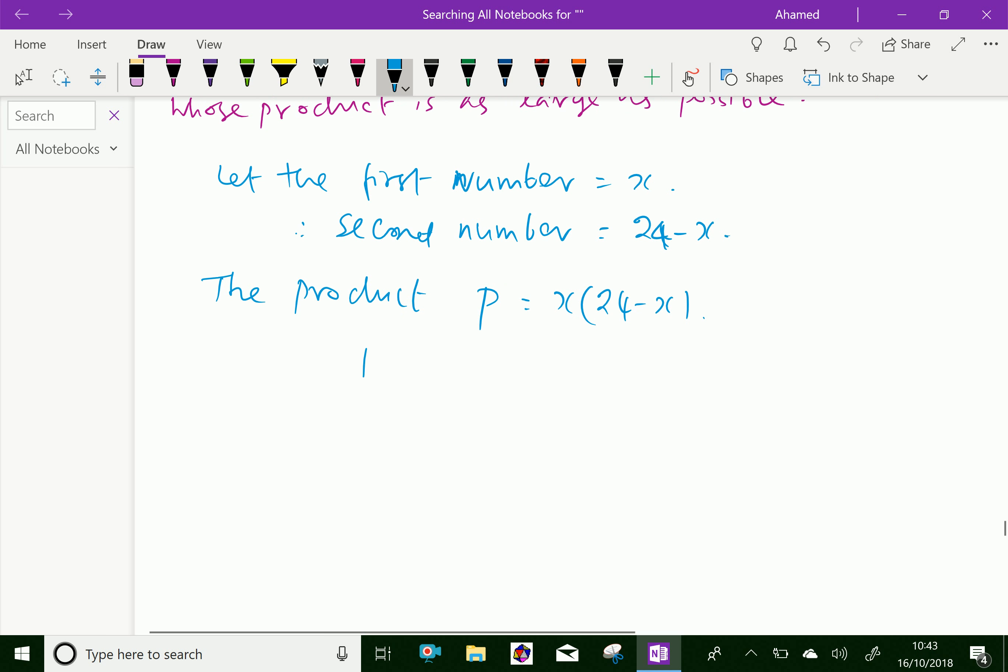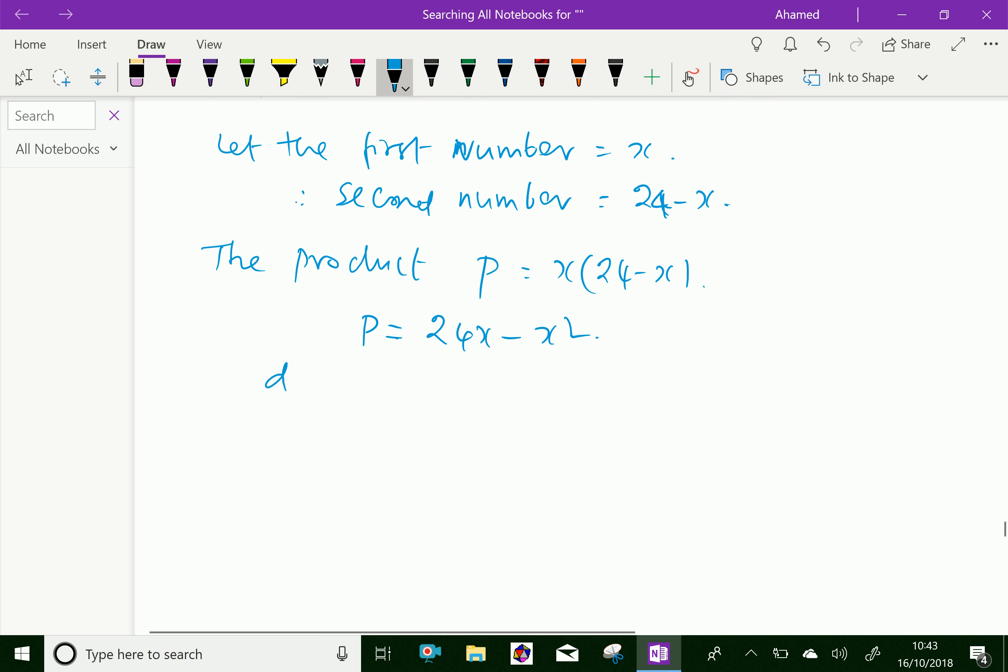Our function is P equals 24x minus x squared. Let us find the first derivative: dP by dx equals 24 minus 2x. Equate zero and get x equals 12.